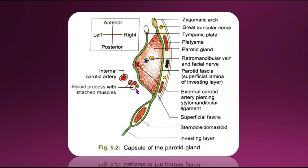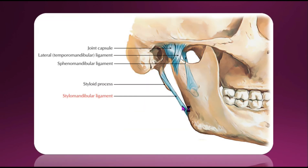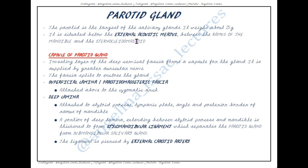A portion of the deep lamina extending between the styloid process and the mandible is thickened to form the stylomandibular ligament, which separates the parotid gland from the submandibular salivary gland. This ligament is pierced by the external carotid artery.